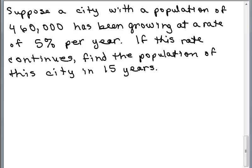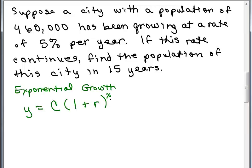OK. So we're talking about exponential growth because the population is growing. So we take the formula for exponential growth, y equals C times 1 plus R to the X, and we need to fill in the values for C, R, and X.